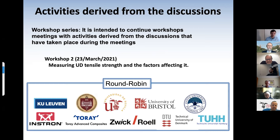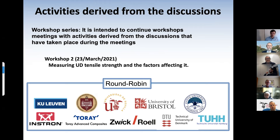It is important to say that this workshop does not simply end at six o'clock Belgian time, because depending on the meeting, we have had the initiative to continue with discussion. In particular, we have developed a round-robin derived from the second workshop on measuring UD tensile strength and the factors affecting it. You can see on screen the institutions involved in the round-robin exercise. It is at the present moment very advanced — we think we will have results at the middle of the year and conclusions at the end of the year.